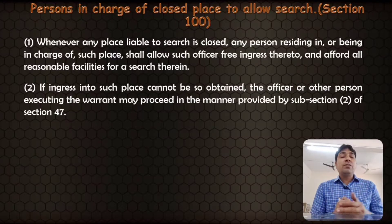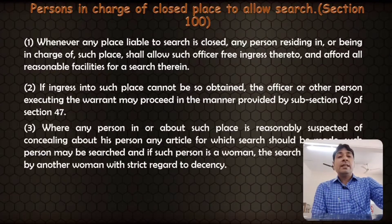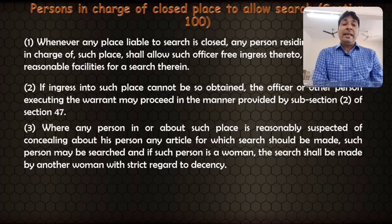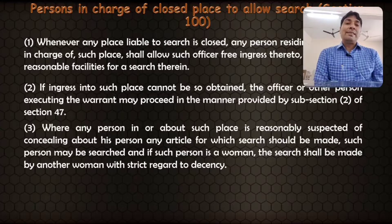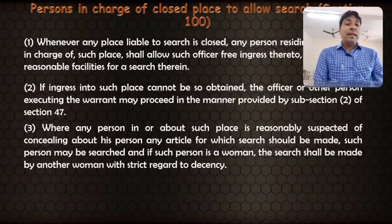Section 47 sub-clause 2: where any person in or about such place is reasonably suspected of concealing about his person any article for which search should be made, such person may be searched; and if such person is a woman, the search shall be made by another woman with strict regard to decency.